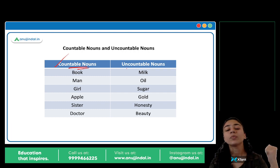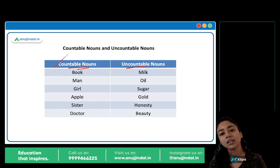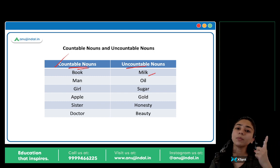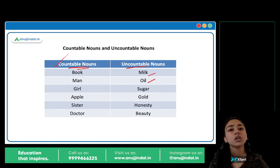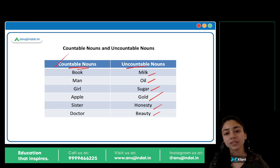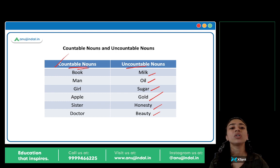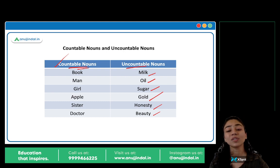And uncountable nouns hain joh count nahin kar sakte hain. Jaise milk — can you count milk? One milk, two milks? No. Can you count oil? No. Sugar? No. Gold, honesty, beauty — kya yeh cheezein count kar sakte ho? No. Toh yeh uncountable hain. Toh countable hote hain joh count kar sakte hain, and uncountable joh count nahin kar sakte hain.